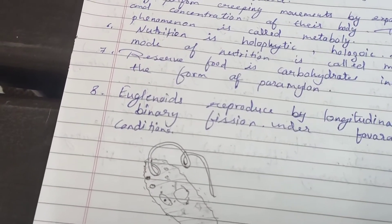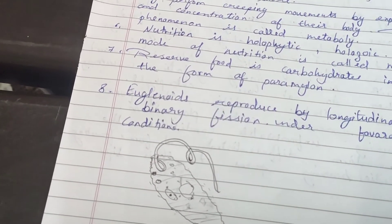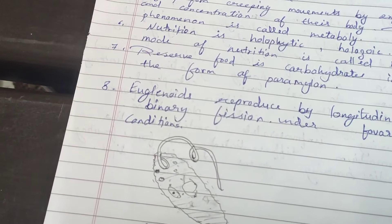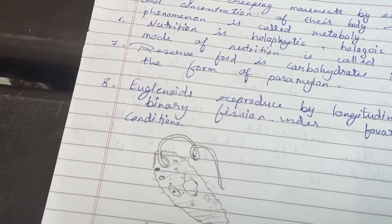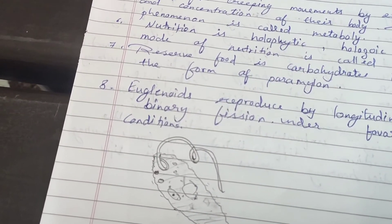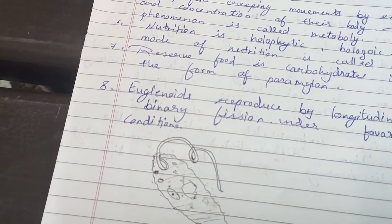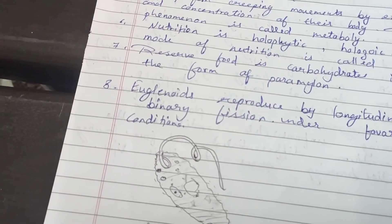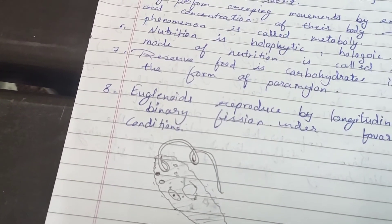Under unfavorable conditions, euglenoids form cysts.